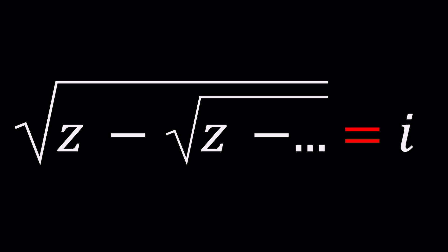E to the power i pi plus 1 equals 0, bringing together very important concepts of mathematics: an irrational number, a transcendental number, an imaginary number, a rational number. Well, transcendental numbers are also irrational, but that's a different story.